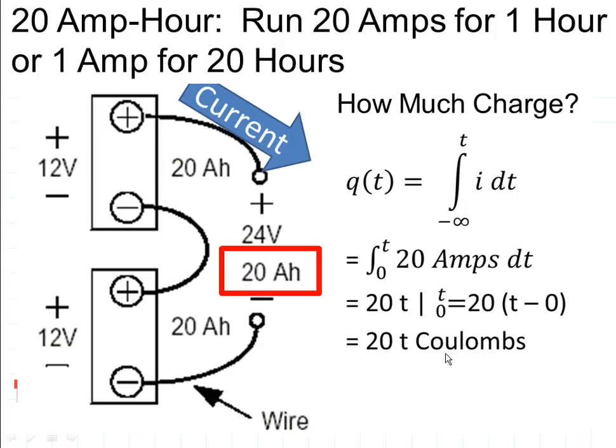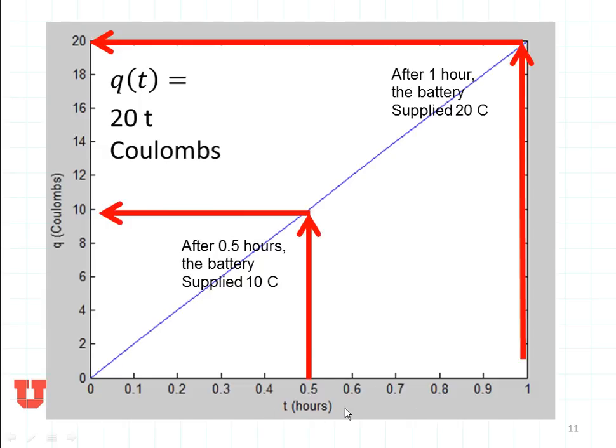Now how long can that go? These batteries are able to support 20T coulombs for up to one hour. That's what this looks like. So if we have time across the bottom and charge across the top, it means that in one half hour we're going to have had 10 coulombs, and in one hour we're going to have had 20 coulombs.